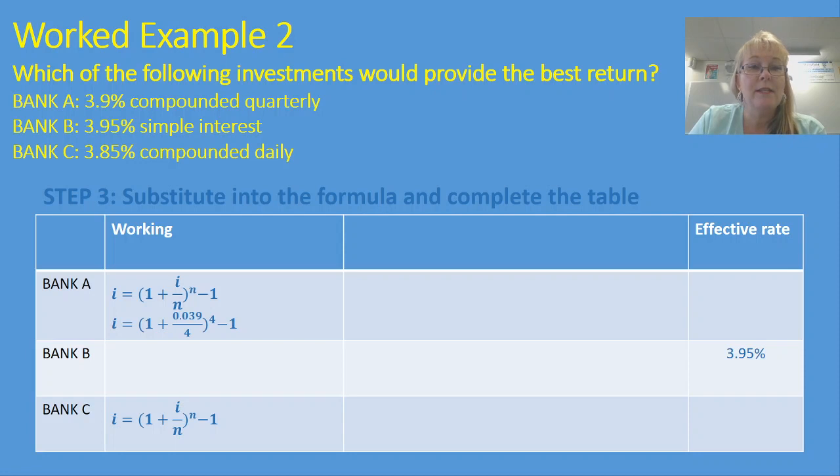So for Bank A, I've inserted 0.039. That's 3.9% as a decimal. And I'm dividing that by 4 because there's four quarters in a year and raising that to the power of 4. My third step is going to be to simplify that using my calculator. And my fourth step is going to be to present the next step of working, which is that particular number raised to the power of 4. And then I'm going to put my final answer in that last column, 3.96%. As you can see already, it's making it very easy for me to compare the three banks when I've got the answer in that same column together.